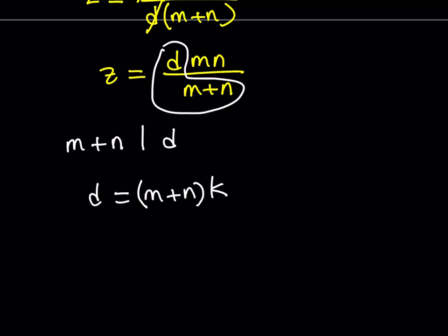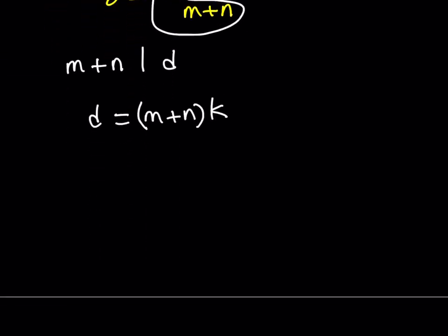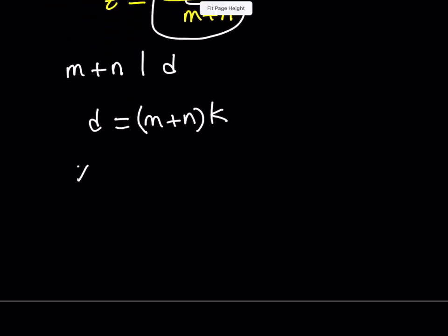Well, we do have two equations for x and y. Remember, we said that x equals dm and y equals dn. So what we can do is we can actually go ahead and use this. Remember, x equals dm. If you replace d with this, you get something like m plus n times k multiplied by m.